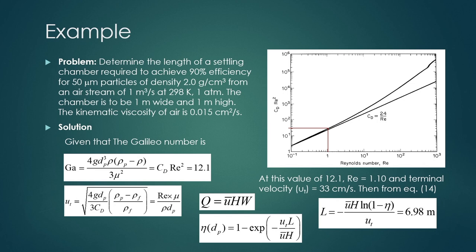Example problem: Determine the length of a settling chamber required to achieve 90% efficiency for 50-micrometer particles of density 2 g/cm³ from an air stream of 1 m³/s at 298 K and 1 atmosphere. The chamber is 1 meter wide and 1 meter high. The kinematic viscosity of the air is 0.015 cm²/s. Based on this, calculate the length of the settling chamber required to achieve 90% efficiency for 50-micrometer particles.